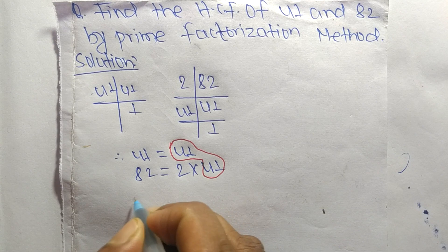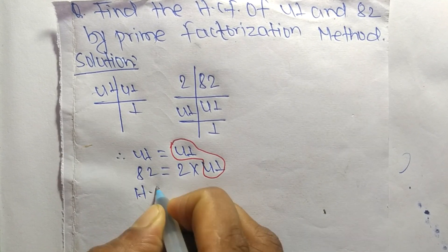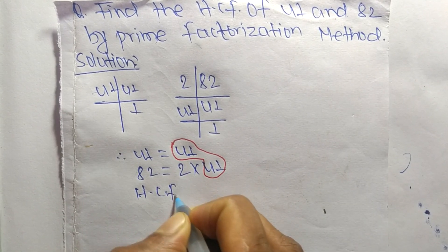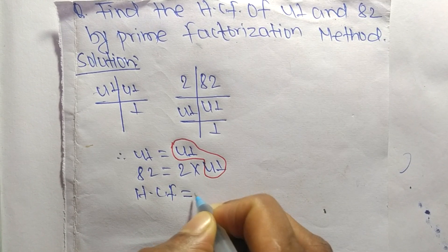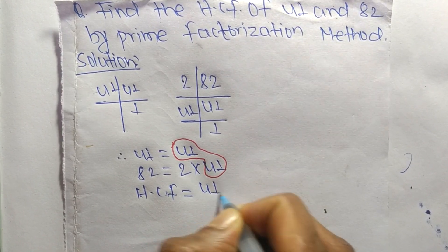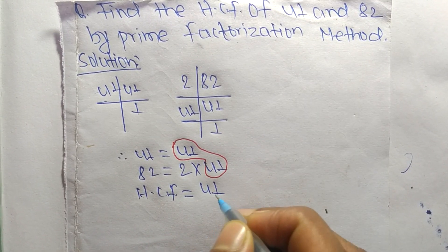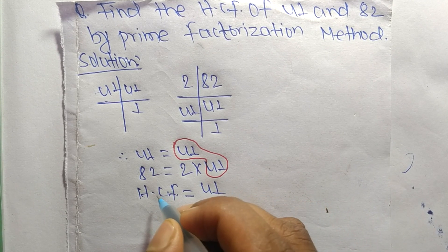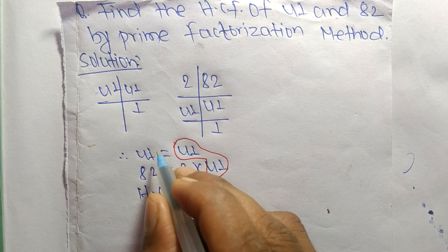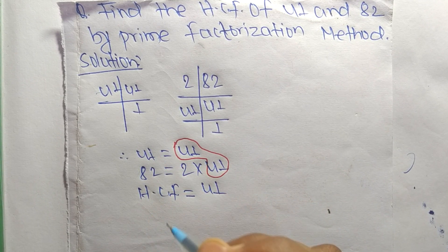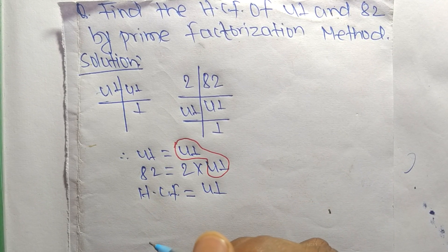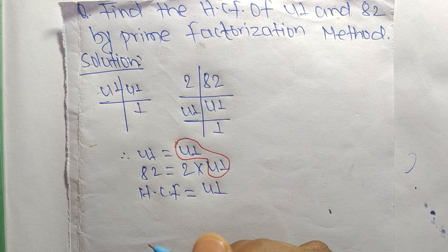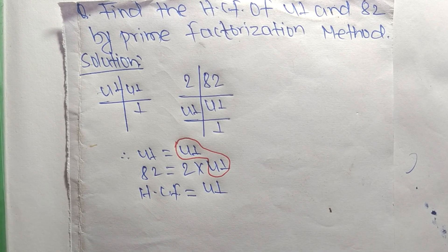Therefore, the HCF is equal to 41. So 41 is the HCF of 41 and 82. That's all for today — thanks for watching.